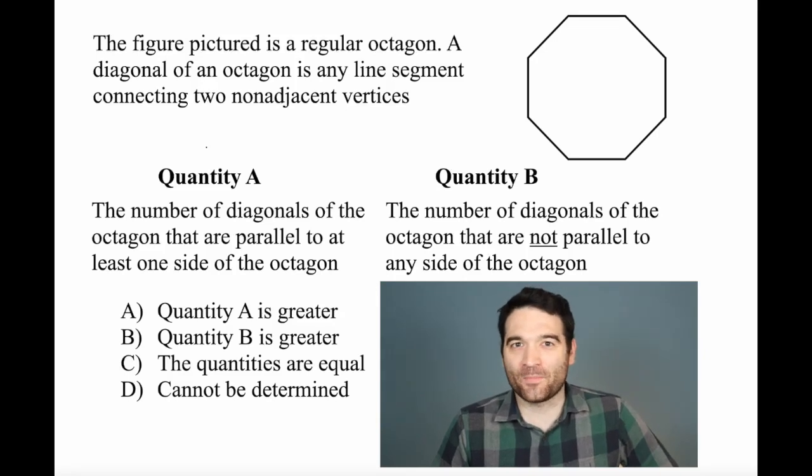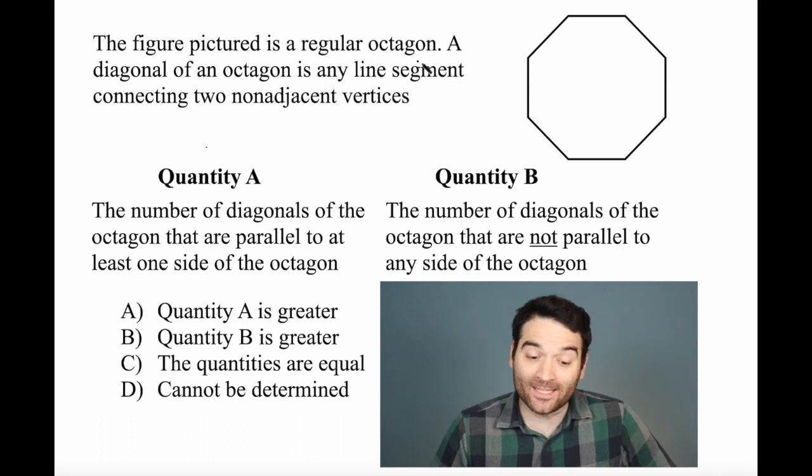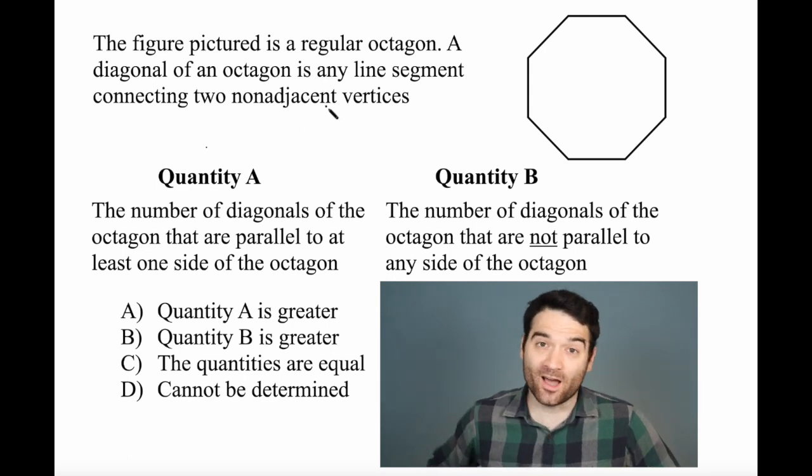Here's a GRE quantitative comparison question. Let's take a look. The figure pictured is a regular octagon. A diagonal of an octagon is any line segment connecting two non-adjacent vertices.